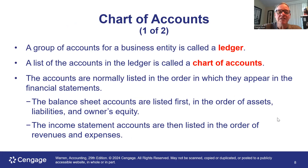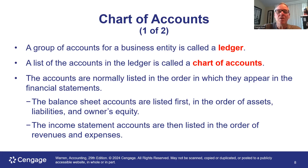A group of accounts for a business entity is called a ledger — think of it as the book where we keep all the T-accounts. A list of all the accounts is called the chart of accounts, and these accounts normally appear in the order they appear in the financial statements. We start with assets — listed in order of liquidity, meaning how quickly they convert to cash — then liabilities, also ordered by how quickly they need to be paid off.